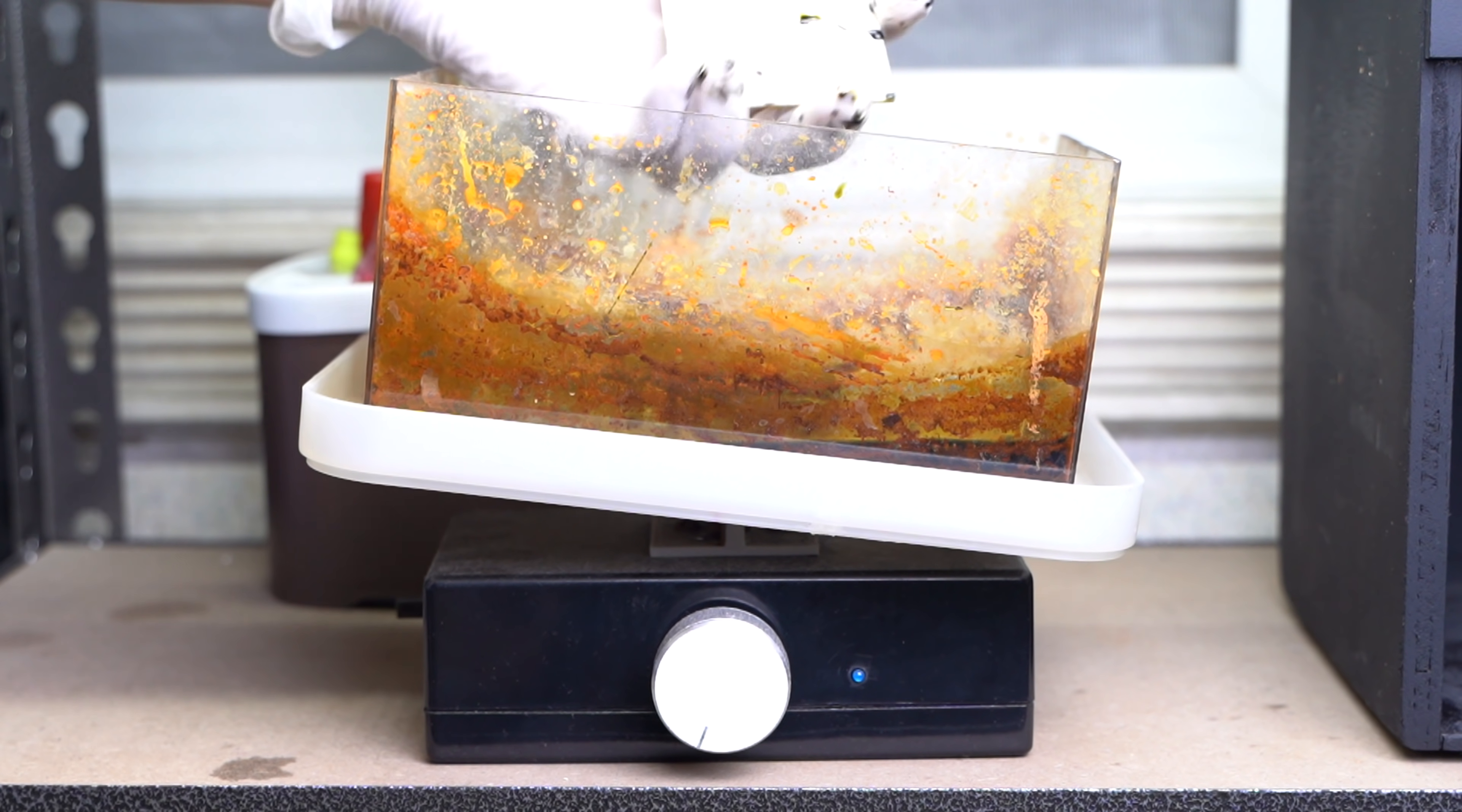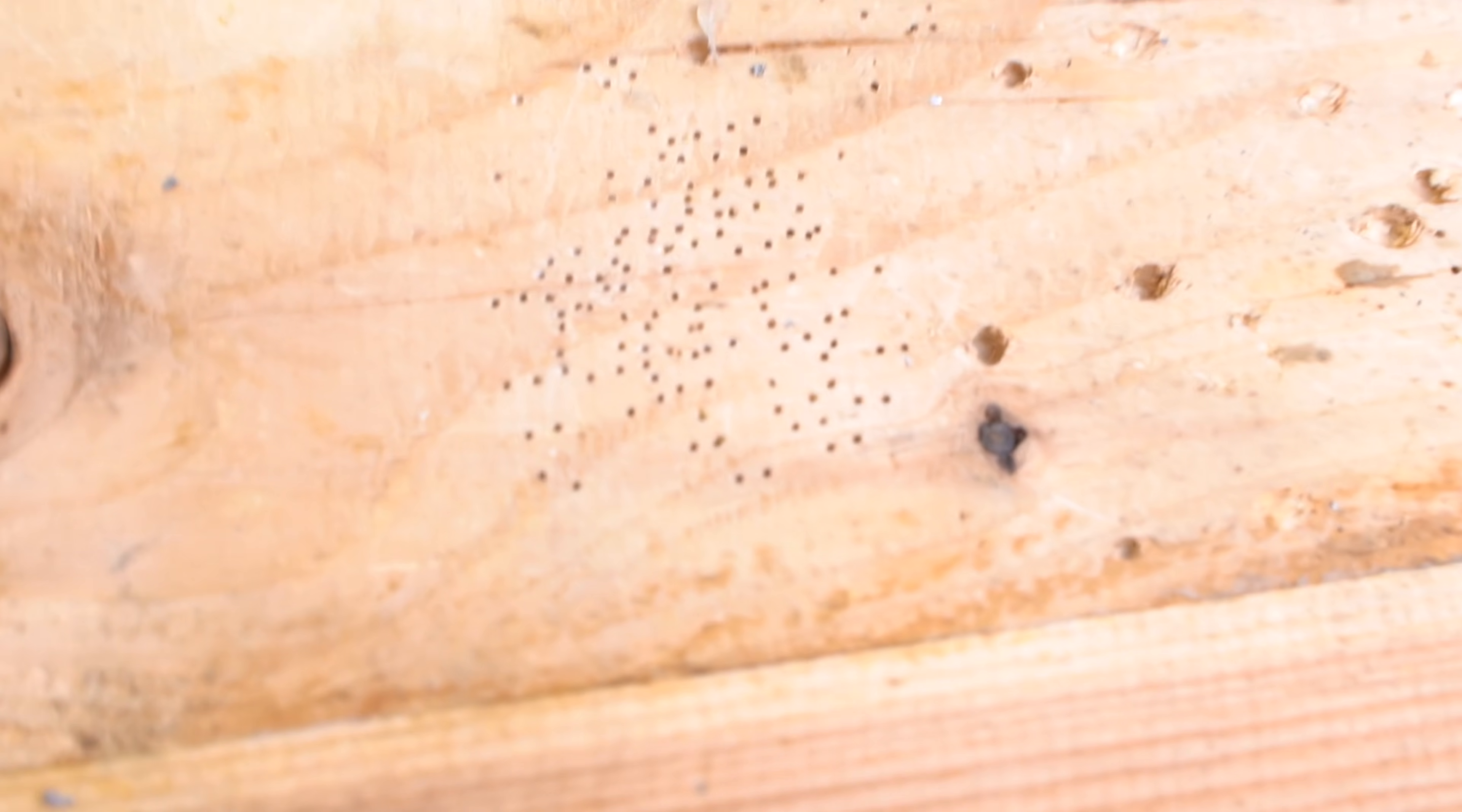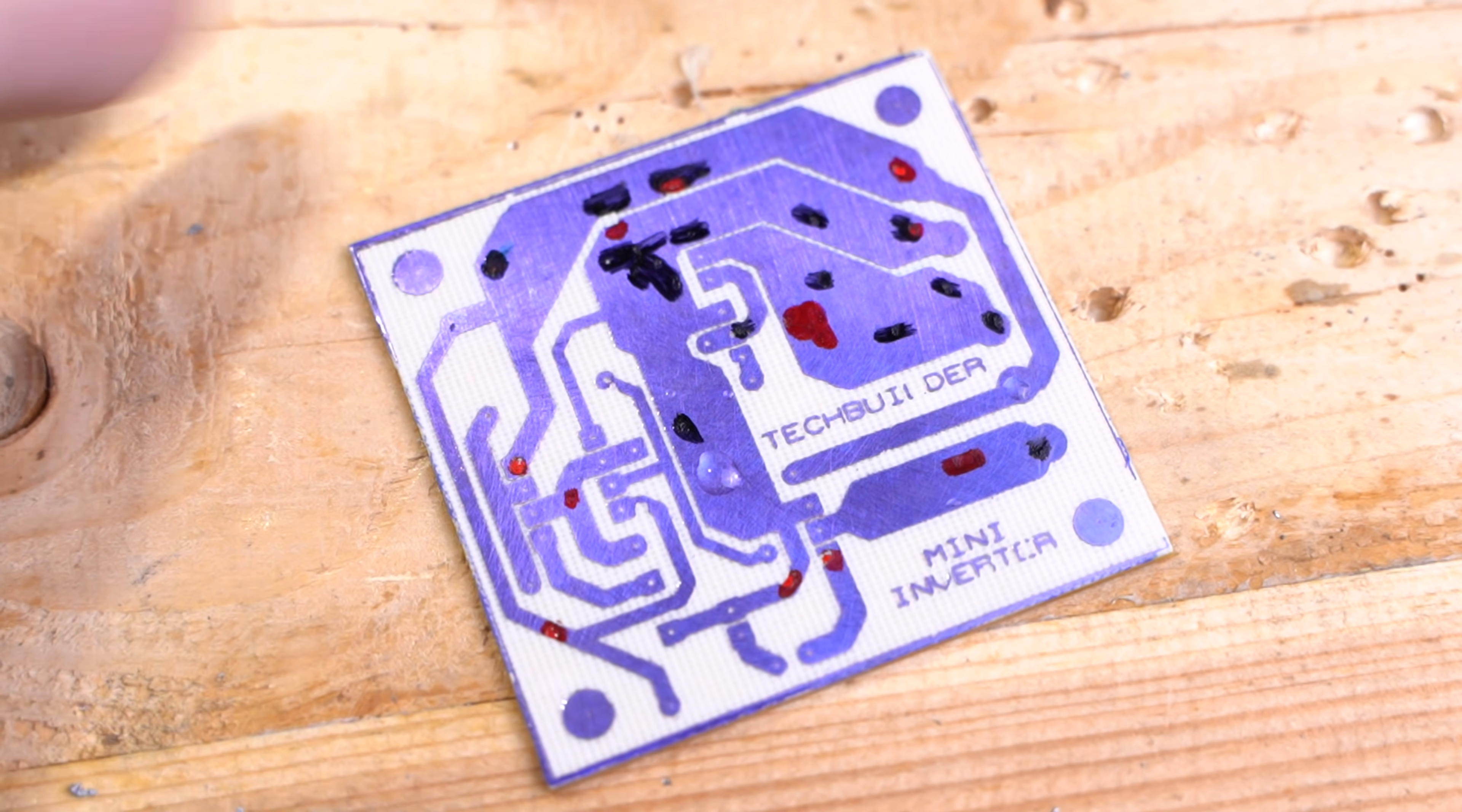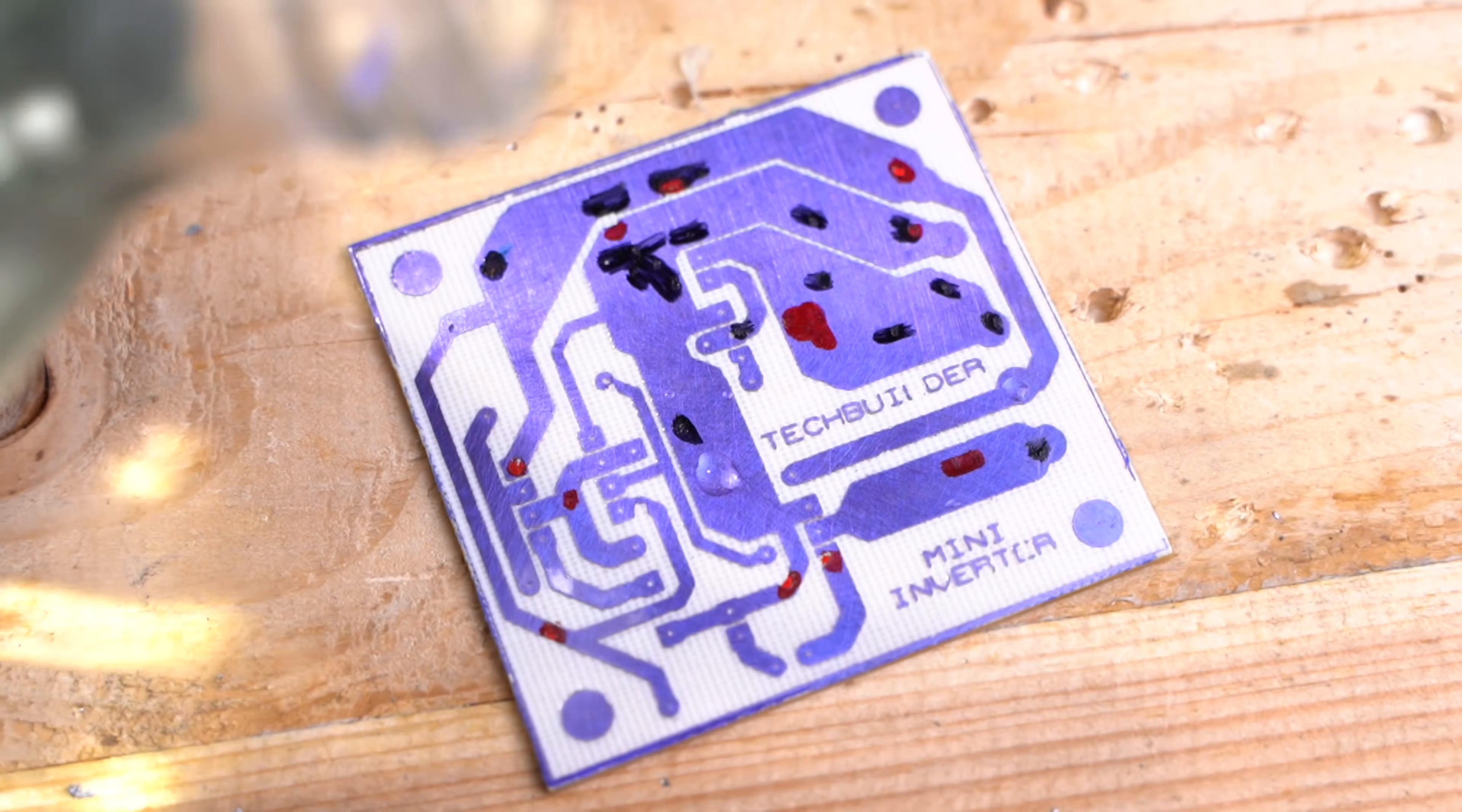When you're done, remove the board from the etching solution and rinse it carefully with water. There are two ways of removing the remaining paint. You can use a sheet of sandpaper but I prefer to use pure acetone as it wouldn't make my lines any thinner.